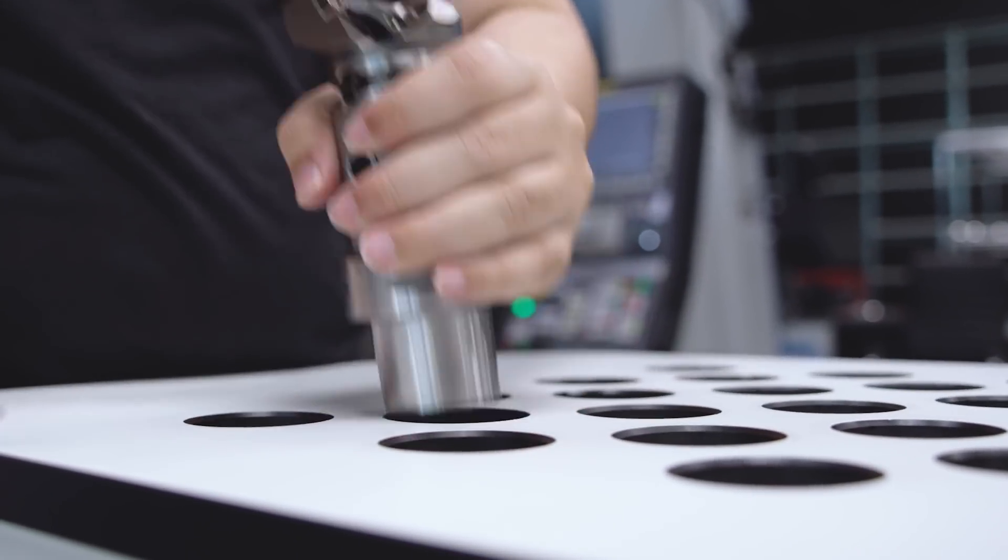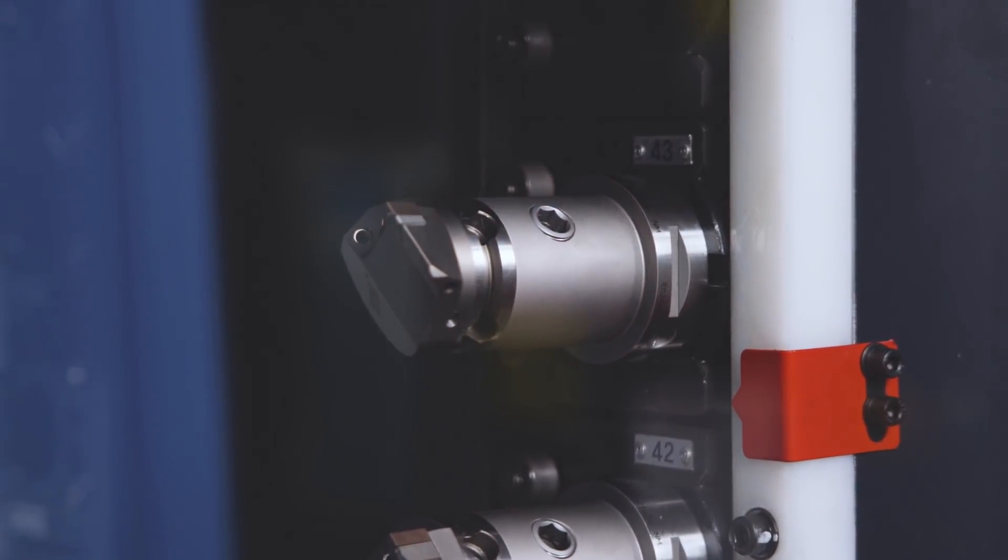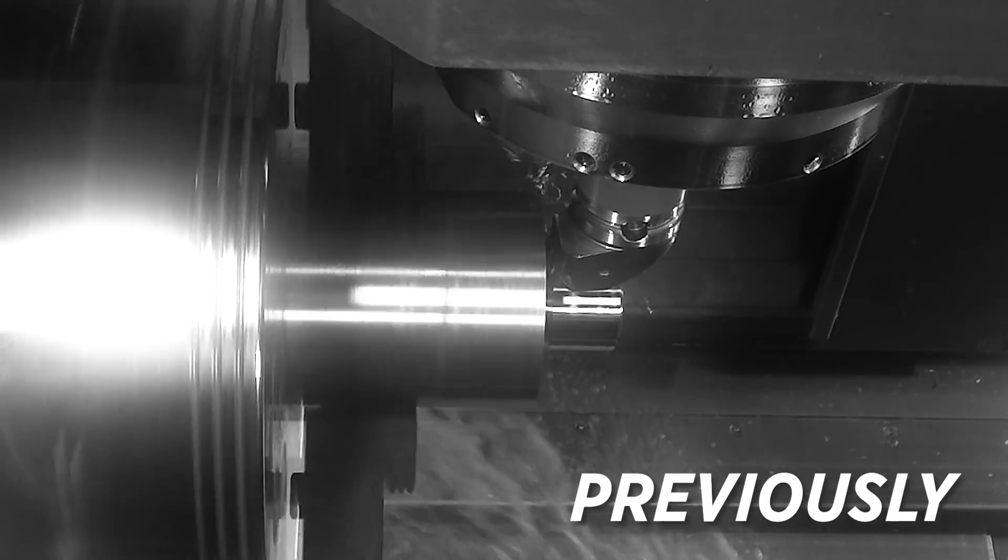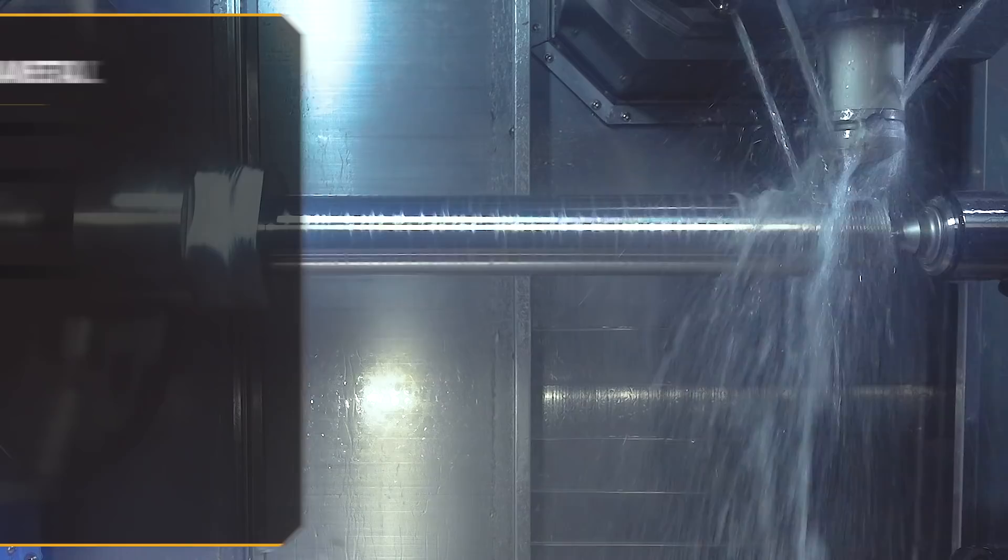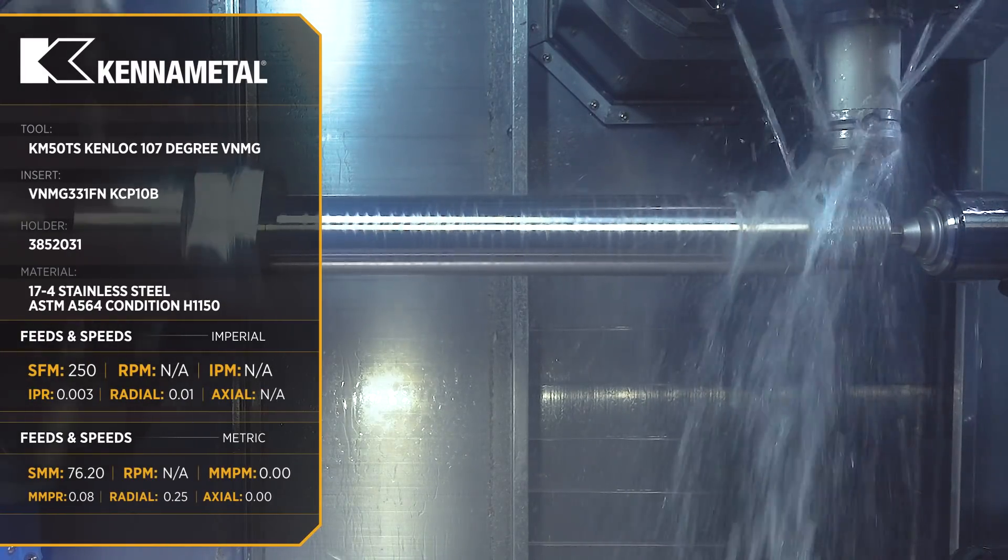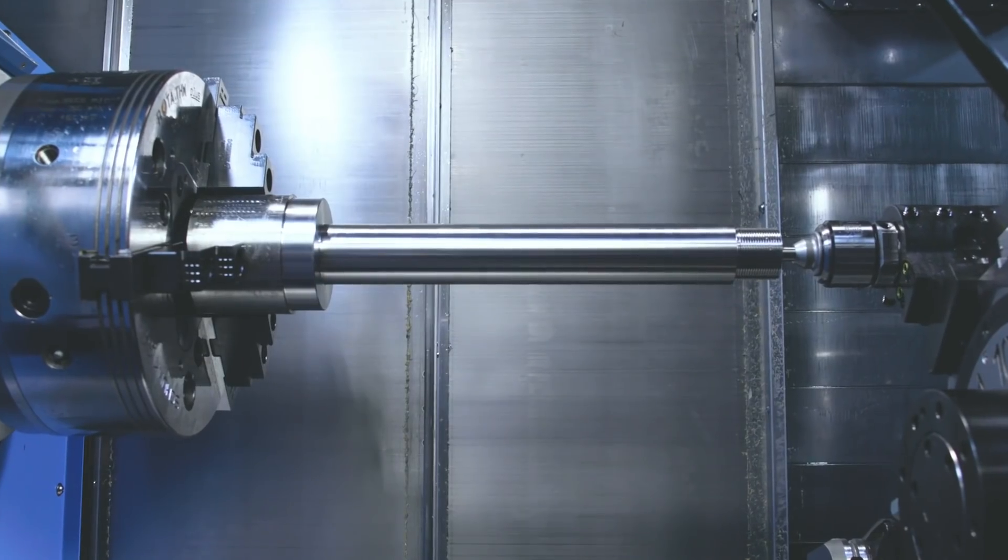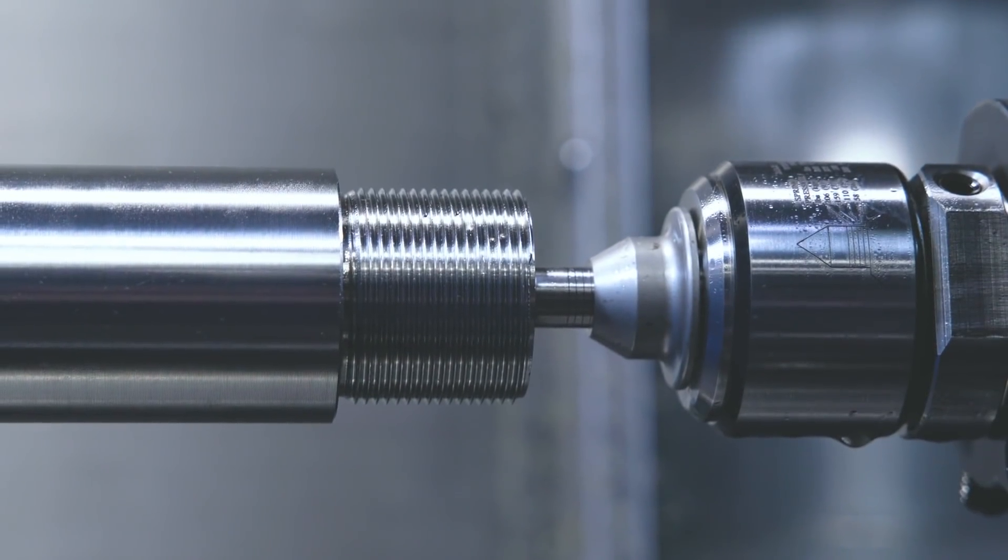For the last tool on this side we have the VNMG 431, the same OD finisher we used on the previous operation. This guy will be running 250 SFM with a feed rate of 3 thousandths per revolution. We shouldn't have any chatter issues or anything because of our setup using the tail center so it should run nice and smooth.